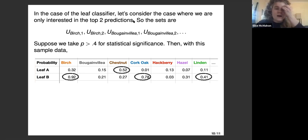In this leaf example, let's consider an example where we're just considering the top two predictions. Then the sets would be U_birch,1, U_birch,2, U_begonia,1, U_begonia,2, etc. We could go through the list having a 1 and a 2 for each of them. If we wanted to say that we had to be greater than 0.4 for statistical significance, and suppose we had this as our sample data, I've circled the data points here that are statistically significant.